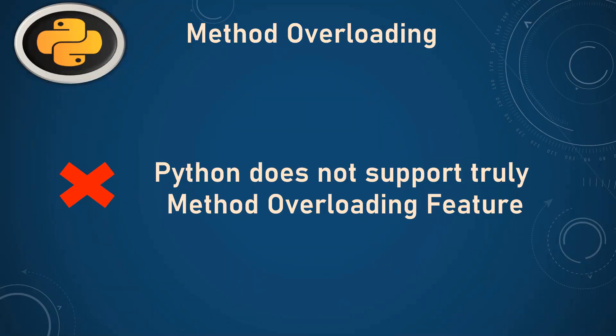Python does not truly support method overloading features, but we can achieve it a little bit using some tricks. Method overloading means a class has methods with the same name but different arguments — the difference is based on the number of arguments and types of arguments. Method overloading is basically used to write code with more clarity and to reduce complexity. Normally in Python we don't have the same name for different methods.